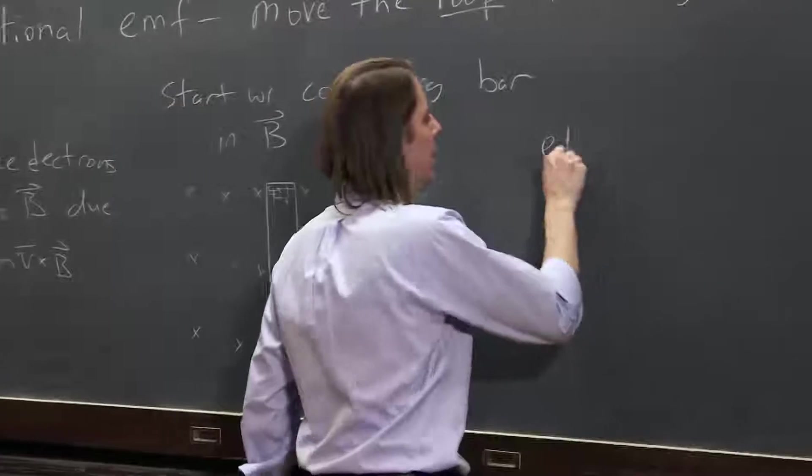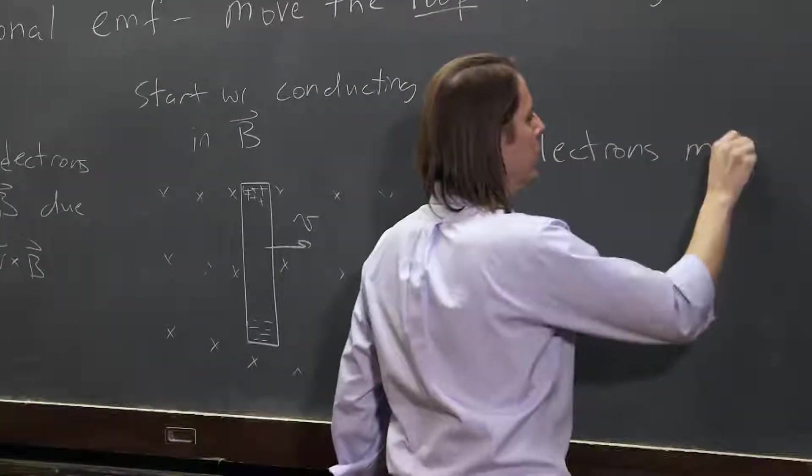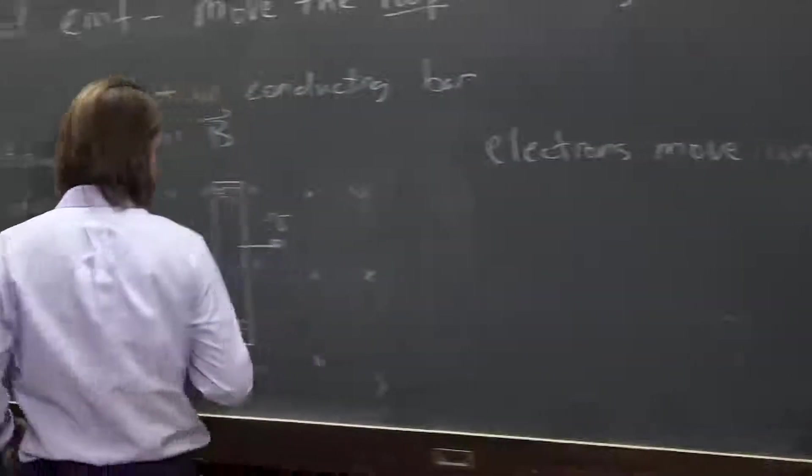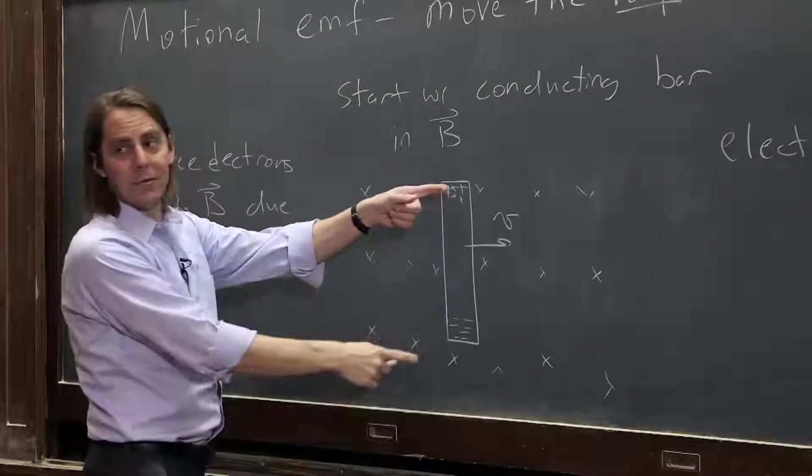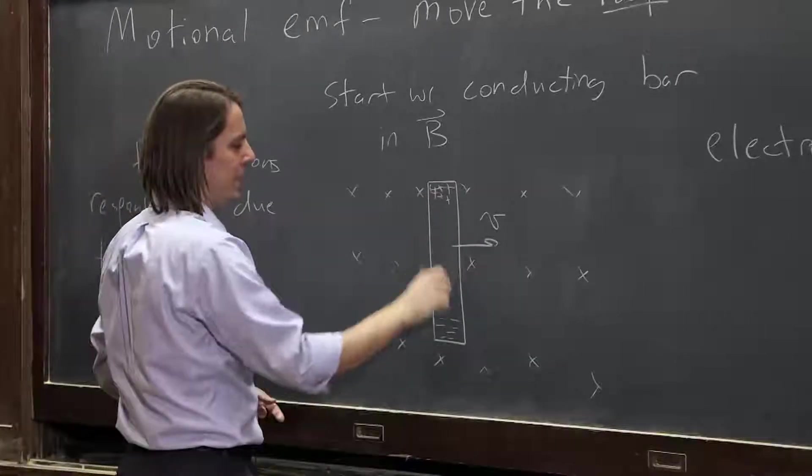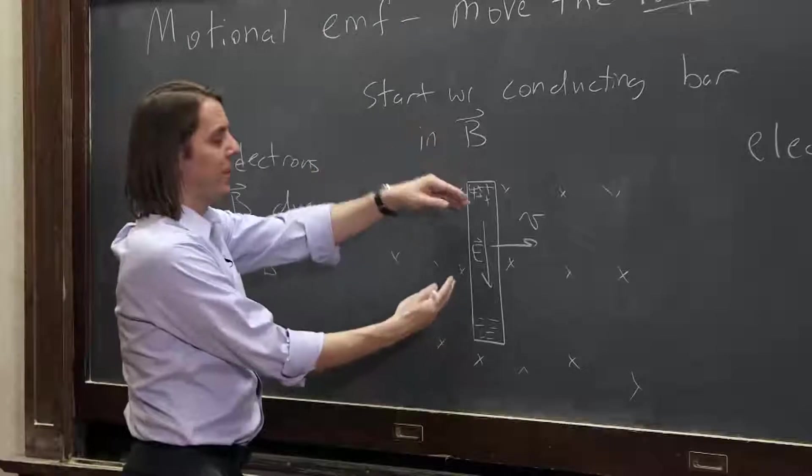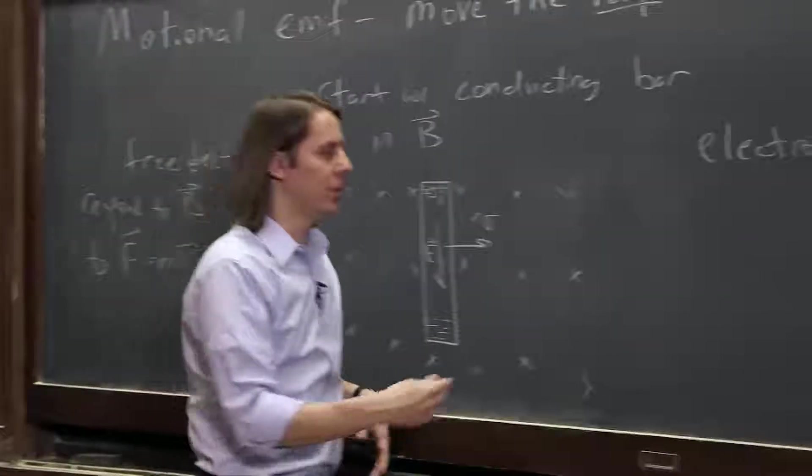And basically, electrons move until, I think we sort of did this before. We're creating an electric field here, an electric field that looks like this inside the material. The electric field makes them want to come together. The magnetic field makes them want to go away, go apart.